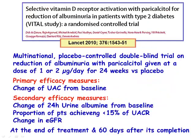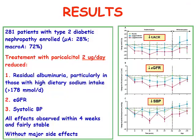Finally, another possible drug which may reduce proteinuria is paricalcitol, an activator of the vitamin D receptor. Published a few years ago in The Lancet, this was a multinational placebo-controlled double-blind trial using one or two micrograms per day for 24 weeks versus placebo. The use of two micrograms per day of paricalcitol actually reduced albuminuria, particularly in those with high dietary sodium intake, reduced estimated GFR, and resistant blood pressure. All effects were observed within four weeks and were fairly stable, without major side effects.